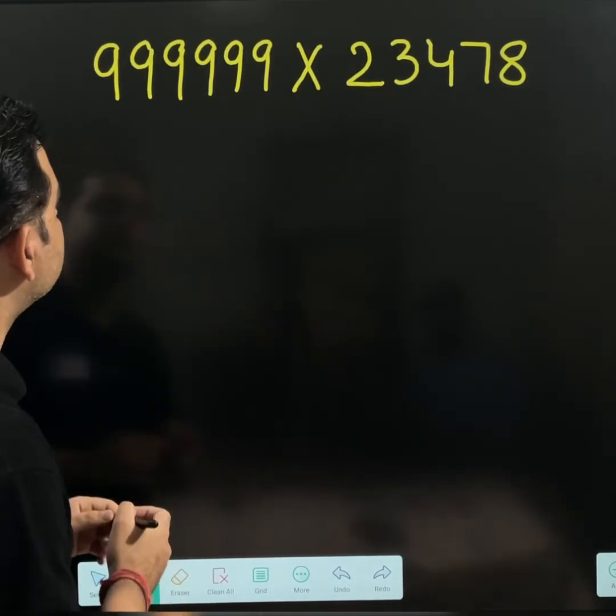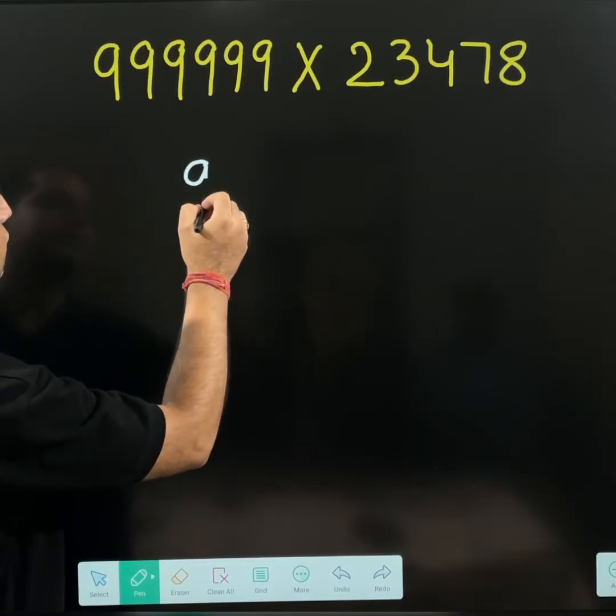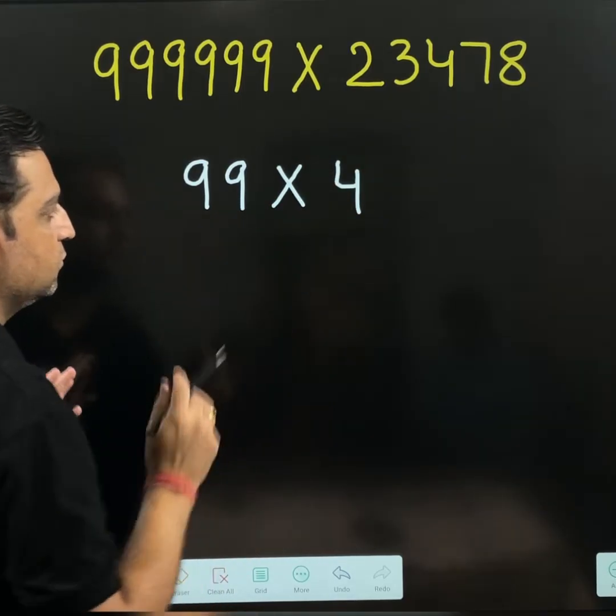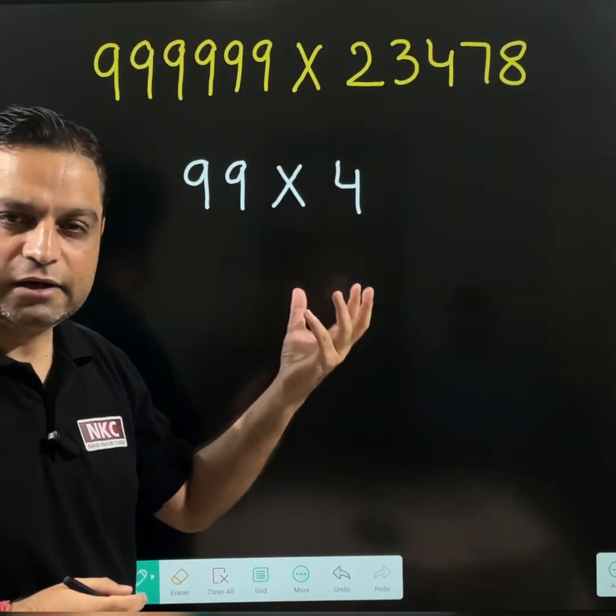For example, I am starting from, let's suppose you need to multiply 99 times 4. This is a simple number I have taken.